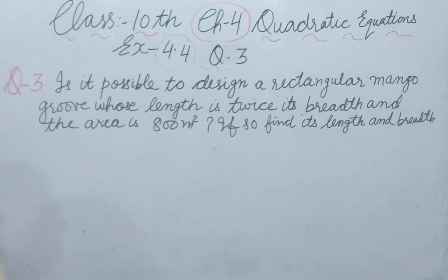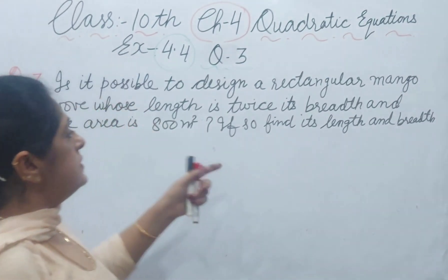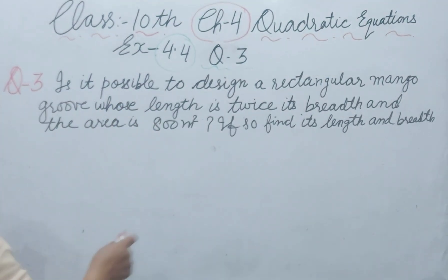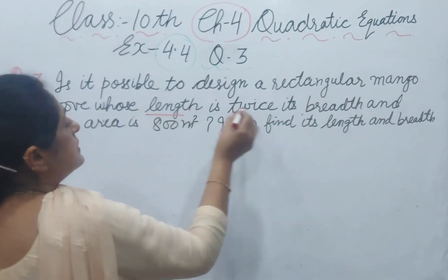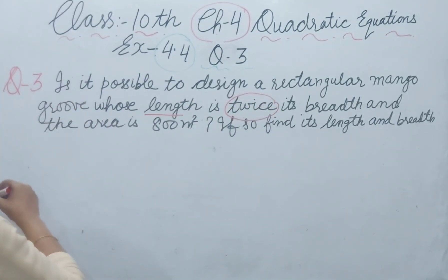So find the length and breadth. Because length is twice the breadth, let the breadth be x meter.